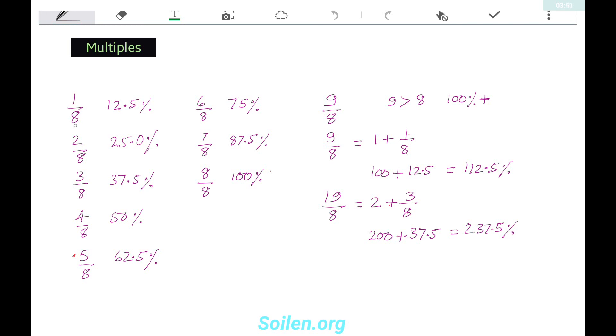Now, 1/8 is 12.5 percent. Then twice of this is 2/8, 25 percent. Thrice of this is 3/8, 37.5%. 4/8 is 50 percent. 5/8 is 62.5 percent. 6/8 is 75 percent. 7/8 is 87.5 percent. 8/8 is 100 percent.